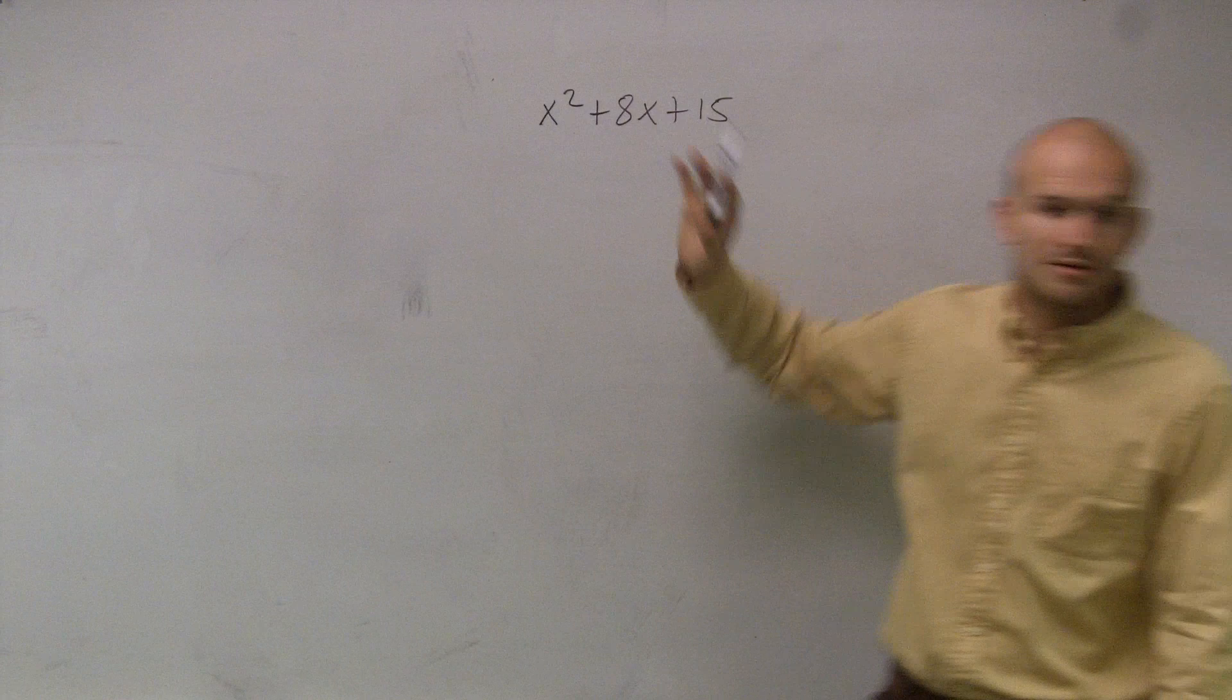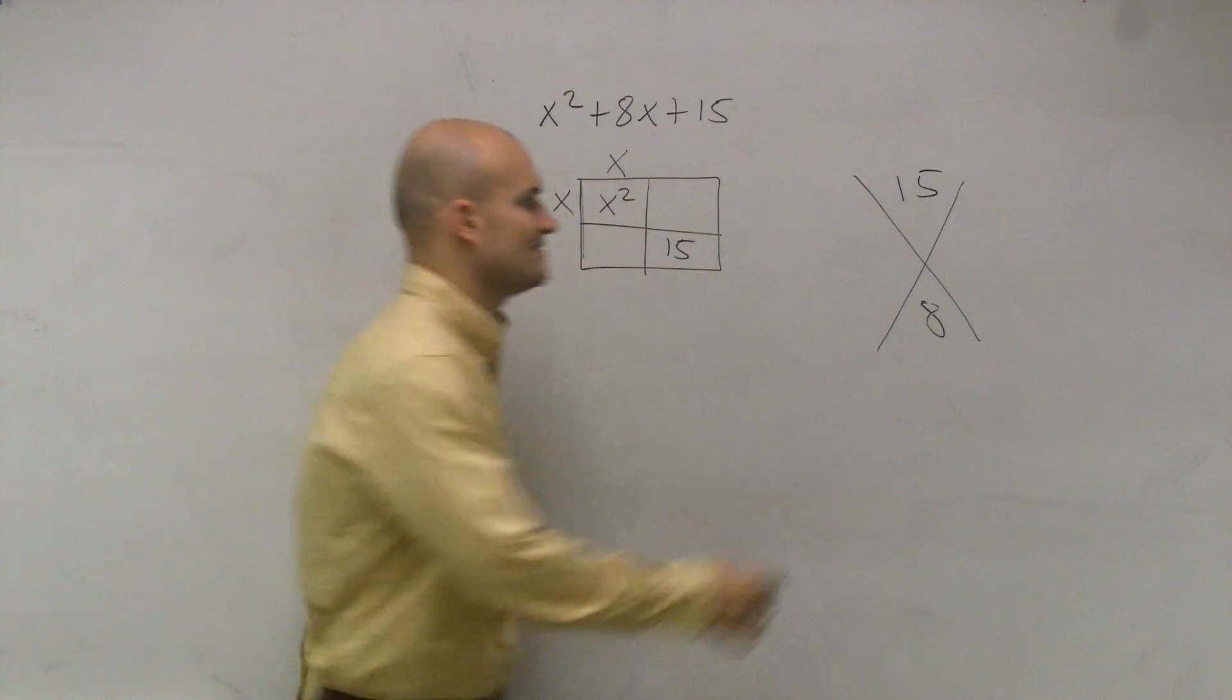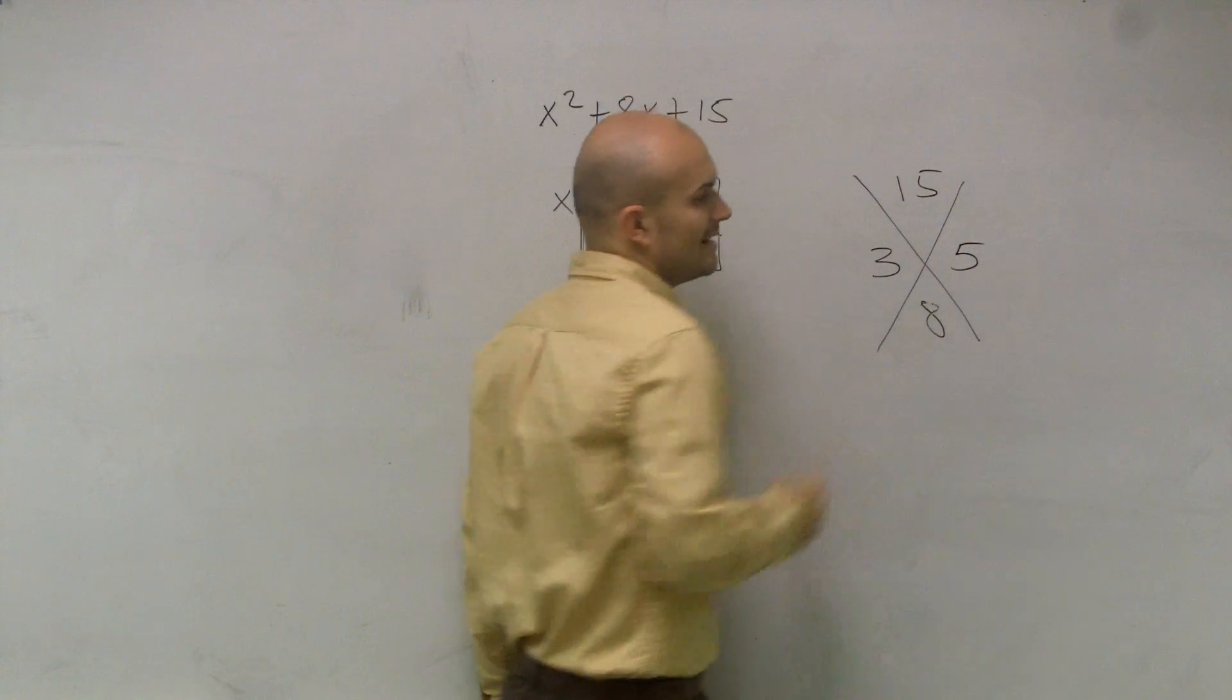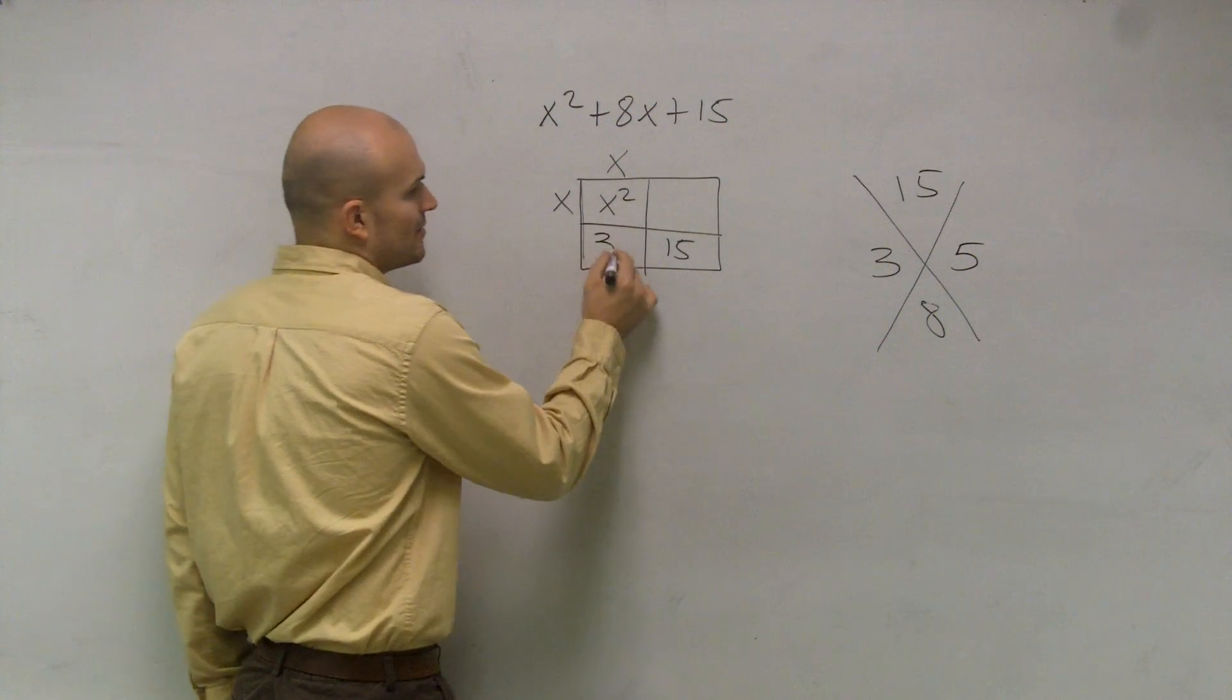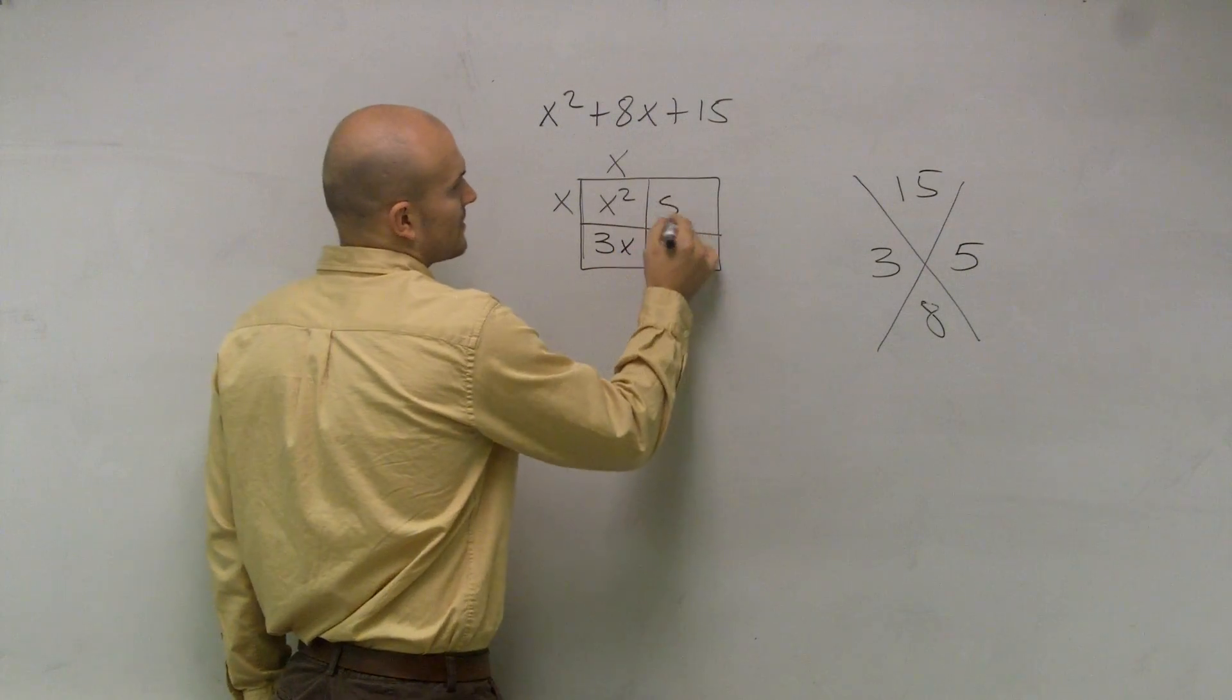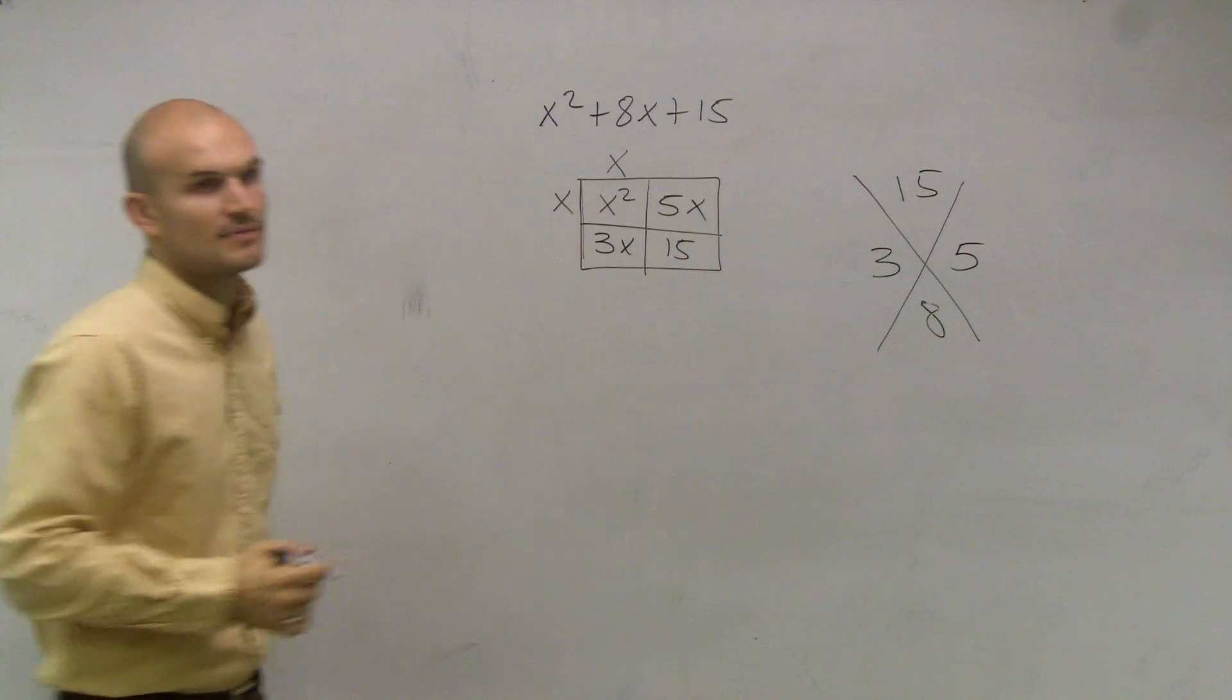And we say what two numbers multiply to give us 15, but add and give us 8. And we say that's going to be a 3 and a 5. So what that tells us to do now is look at, I can rewrite this as a 3X and a 5X. All right?